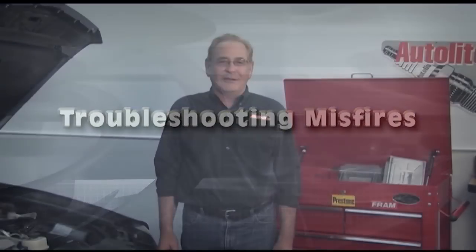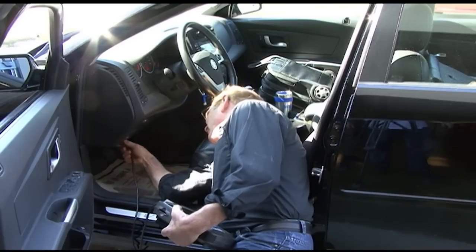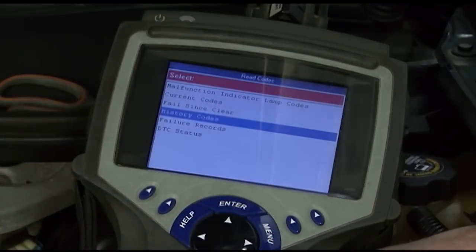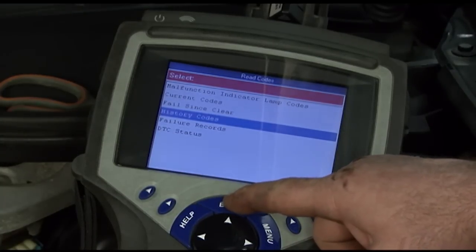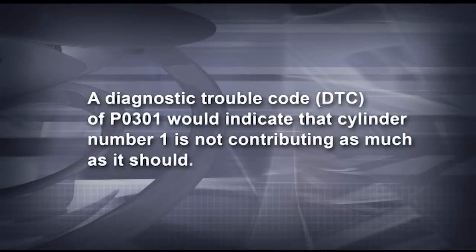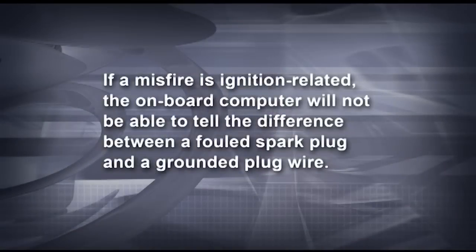If you have a misfire, the check engine light could be on. Begin misfire troubleshooting by connecting a scan tool to read the codes. OBD2 diagnostic trouble codes, or DTCs, can lead you to whichever cylinder is misfiring. For example, a DTC of P0301 would indicate that cylinder number one is not contributing as much as it should, but the DTC will not tell you why it's misfiring. If a misfire is ignition related, the onboard computer will not be able to tell the difference between a fouled spark plug and a grounded plug wire — in this case, you'll have to dig deeper to diagnose the misfire.